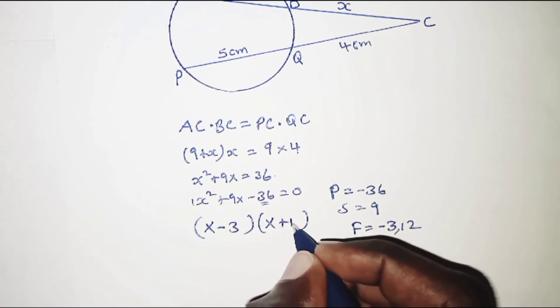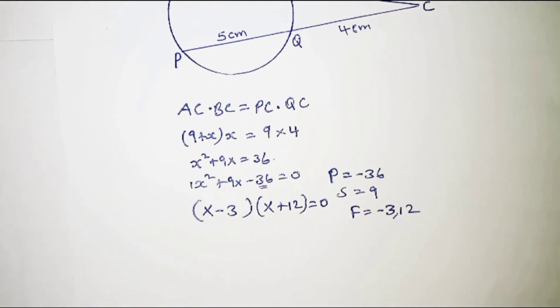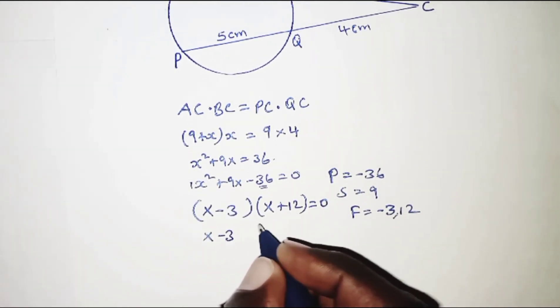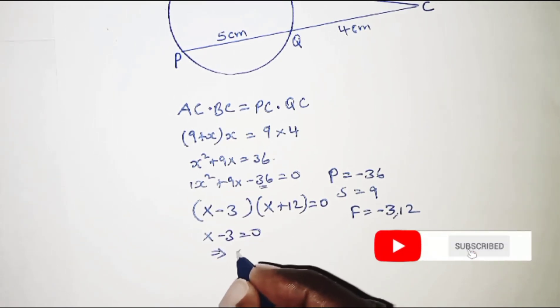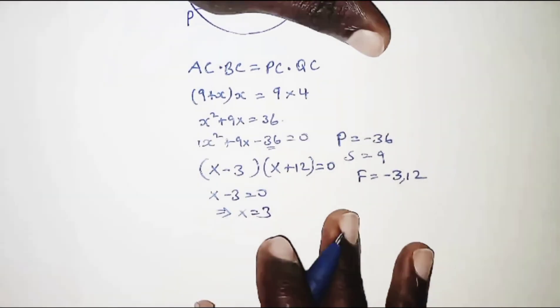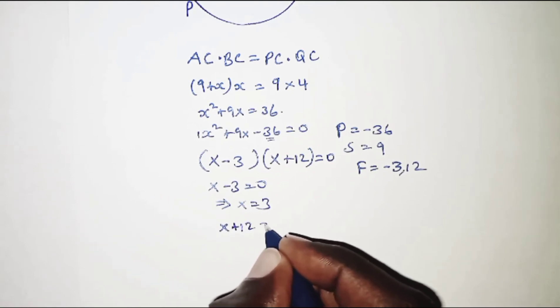From here, x - 3 = 0, which implies x = 3. We also have x + 12 = 0.